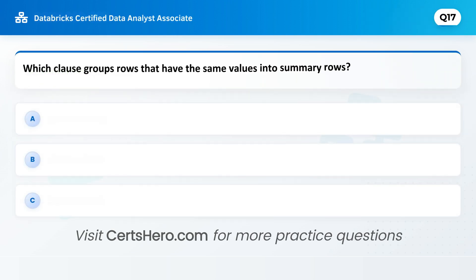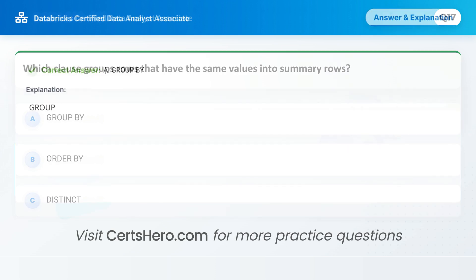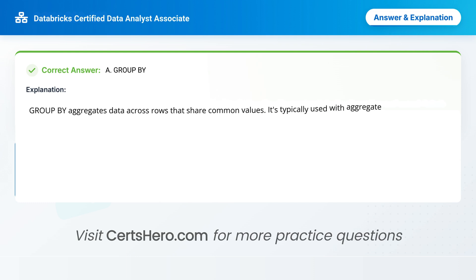Let's test your grouping knowledge. Which clause groups rows that have the same values into summary rows? A. Group by. B. Order by. C. Distinct. Correct answer is A: Group by. GROUP BY aggregates data across rows that share common values. It's typically used with aggregate functions like Count, Avg, and Sum.